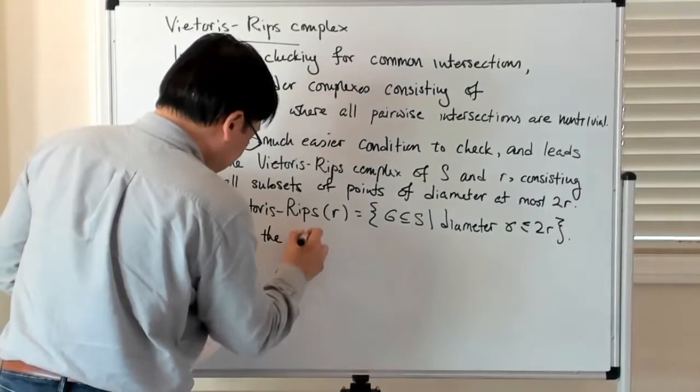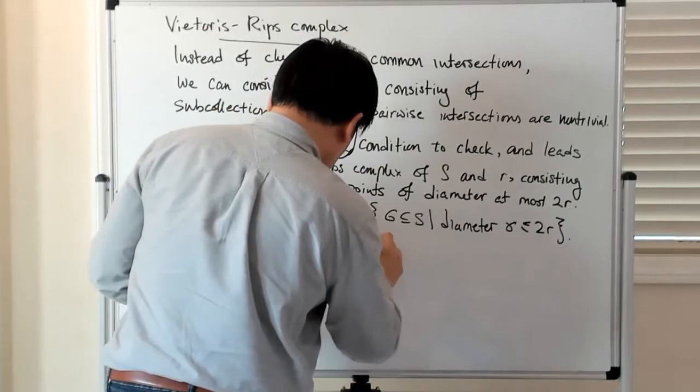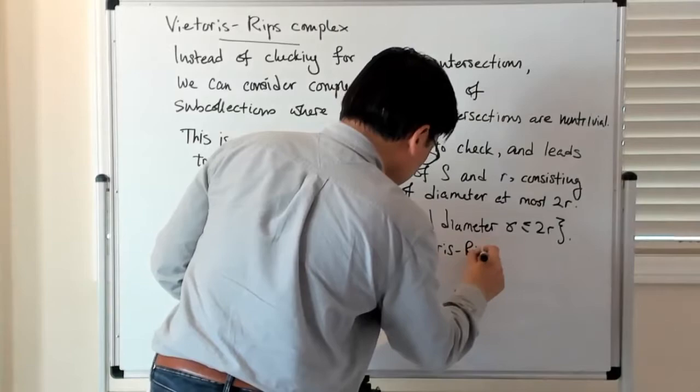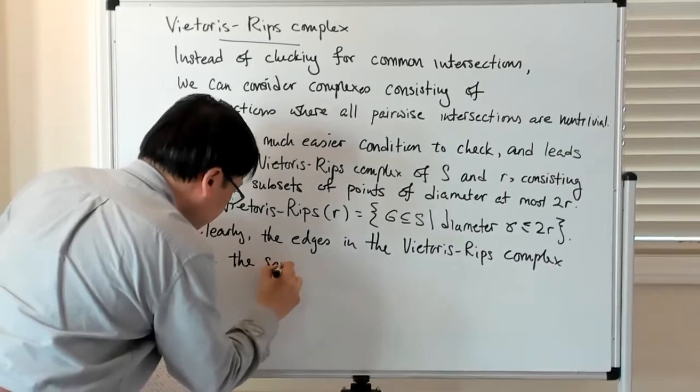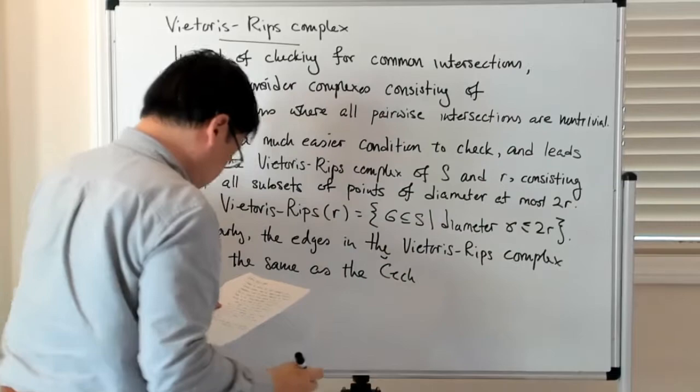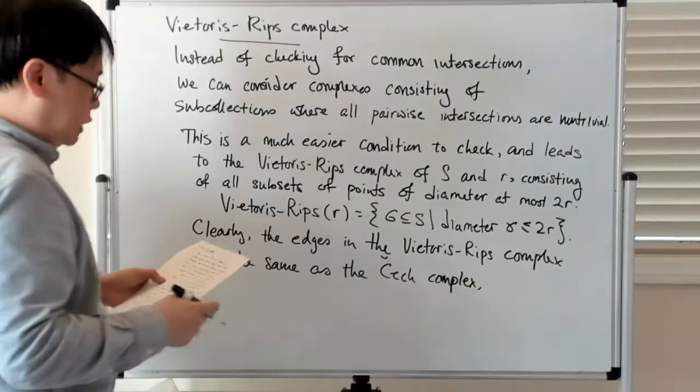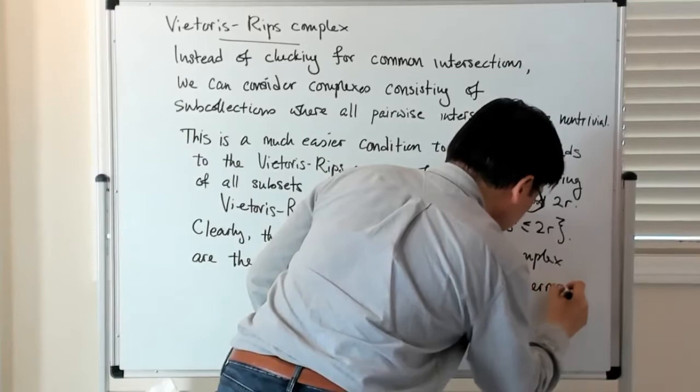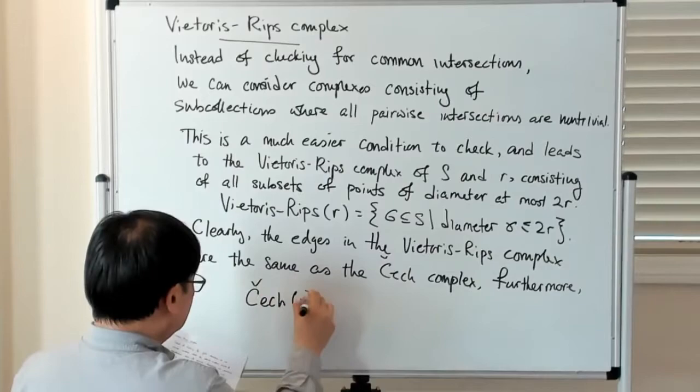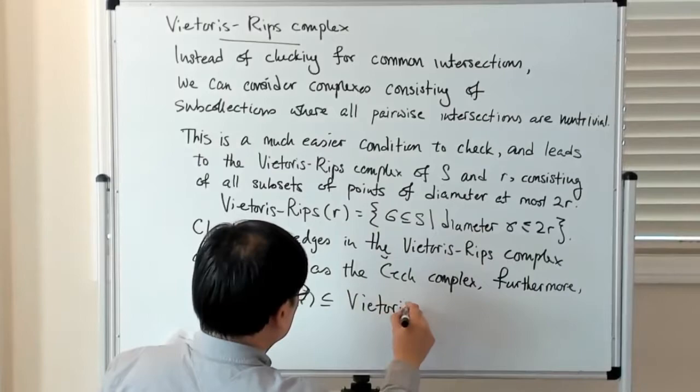So clearly the edges are the same as the Čech complex. And then more generally speaking, the Čech complex is actually contained in the Vietoris-Rips complex.